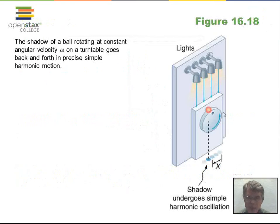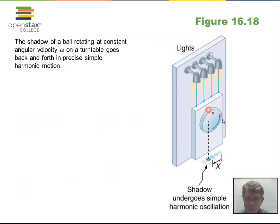There is a connection between simple harmonic motion and circular motion. If you shine a light straight down on an object moving in a circle and observe only its shadow, the shadow moves with maximum speed at the center and slows to zero at the ends — just like a spring or pendulum, which has maximum speed at the equilibrium point and zero velocity at the amplitude of the motion.